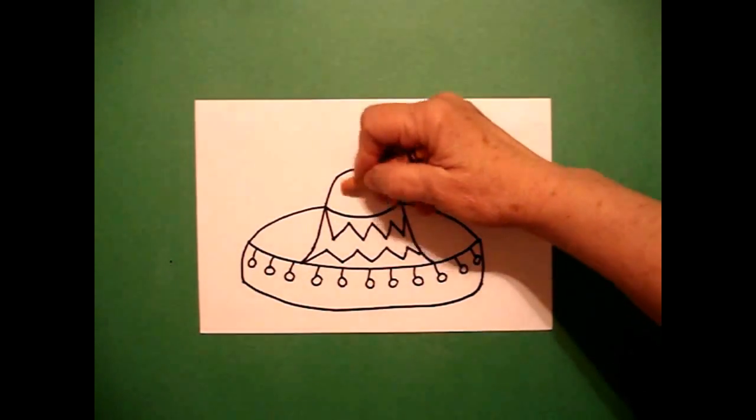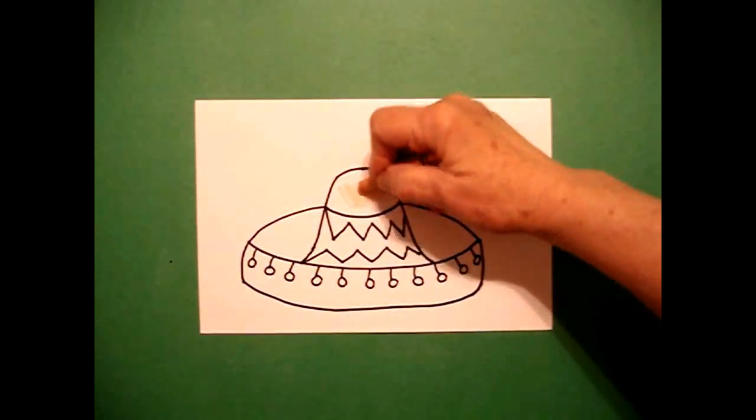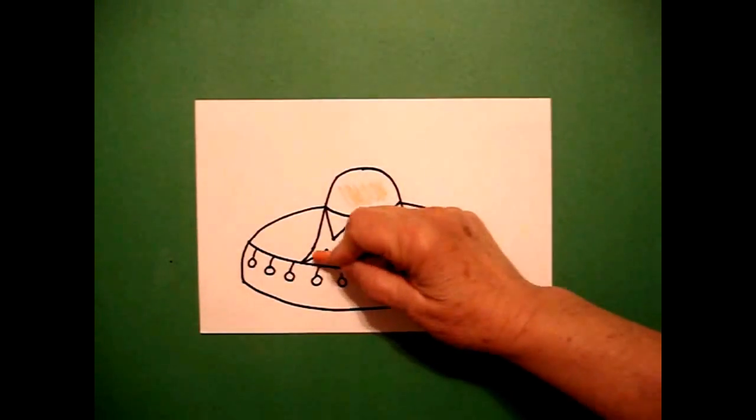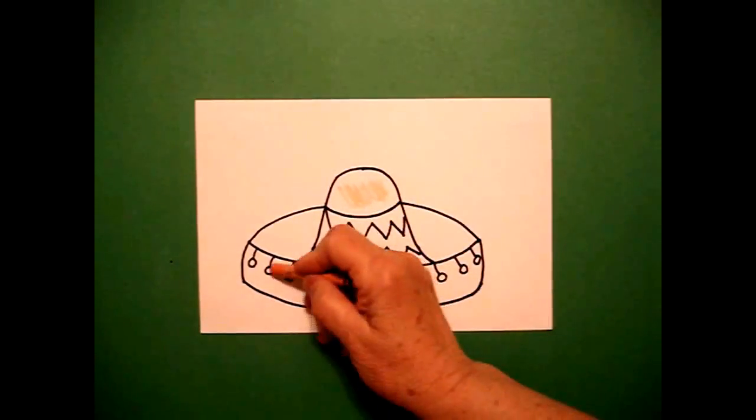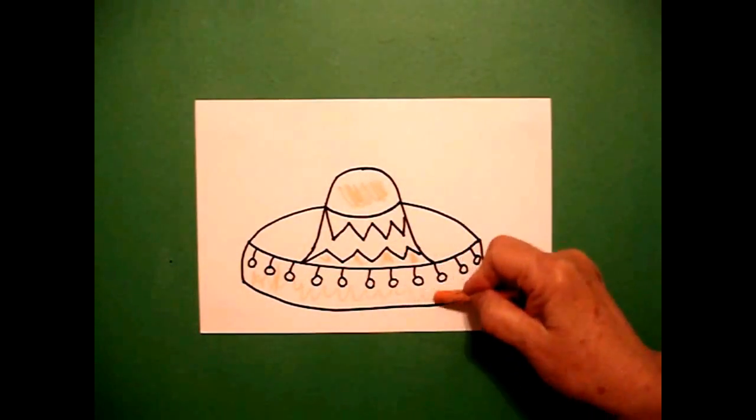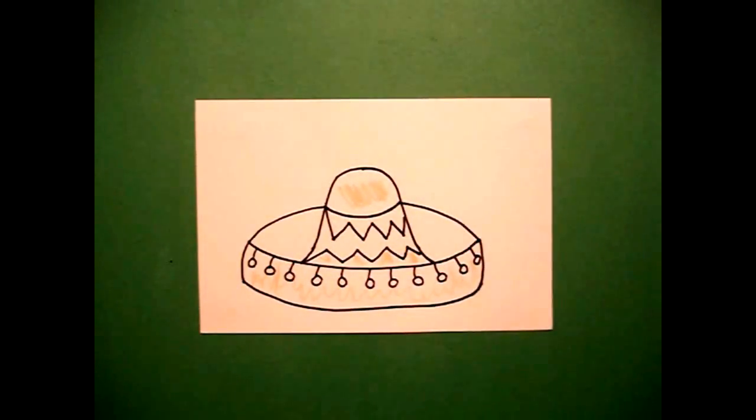I have a peach colored crayon, so I'm going to color my crown. And I'm going to color in between, down here in my main zig-zag. And I'm going to color this section around my dingle balls. If you don't have peach, you can always use brown and just color lighter.